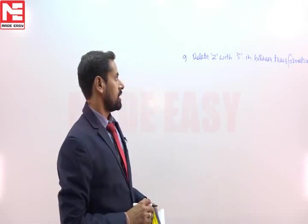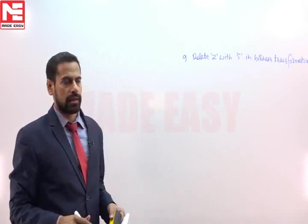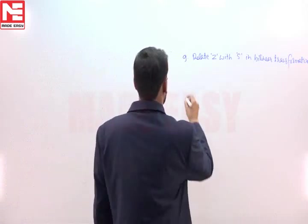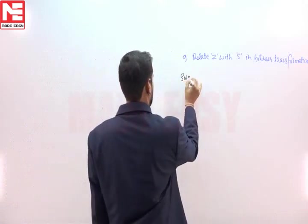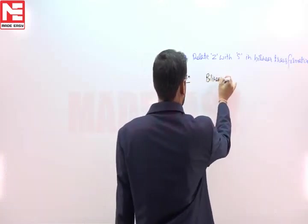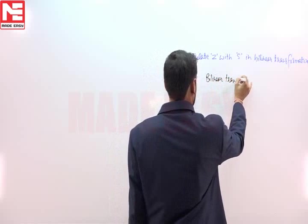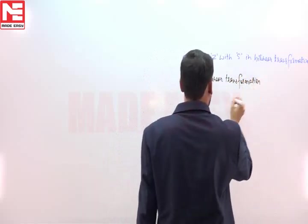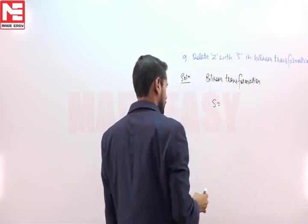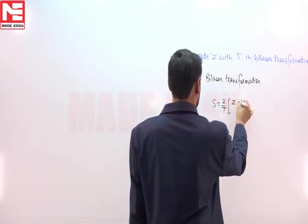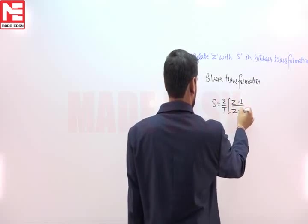In the next question we have to relate variable z with variable s in bilinear transformation. As we know in the case of bilinear transformation, the relationship between variable s and z is s is equal to 2 by t, z minus 1 upon z plus 1.